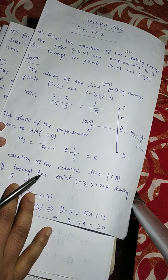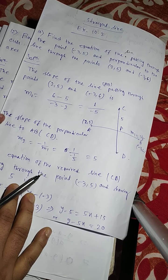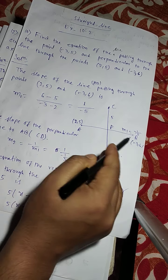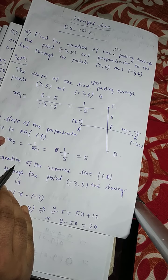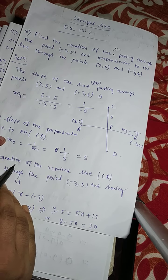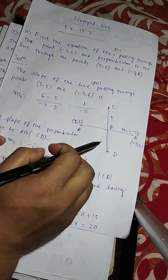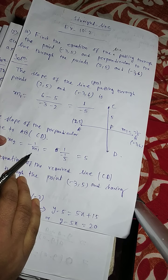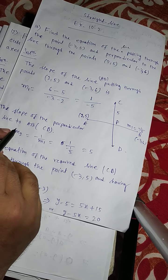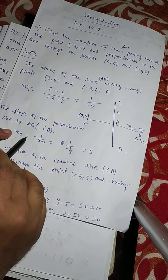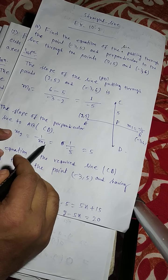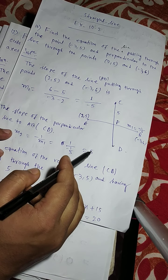Now the slope of the perpendicular line to AB — that means the slope of the line CD — is M2 equals minus 1 by M1, that means 5.